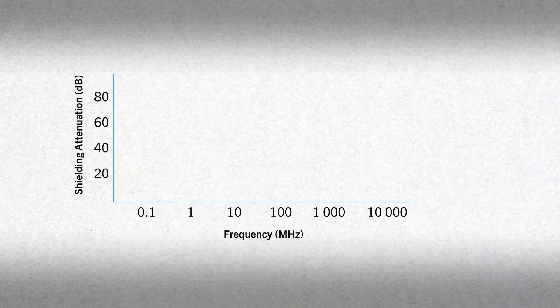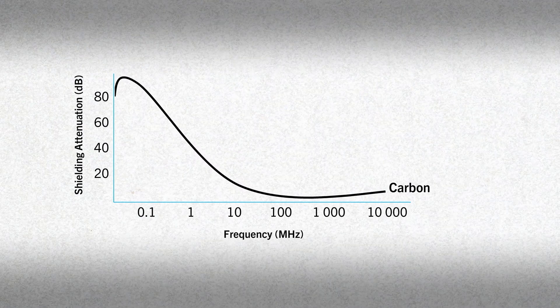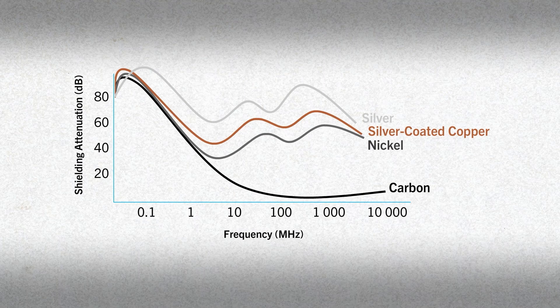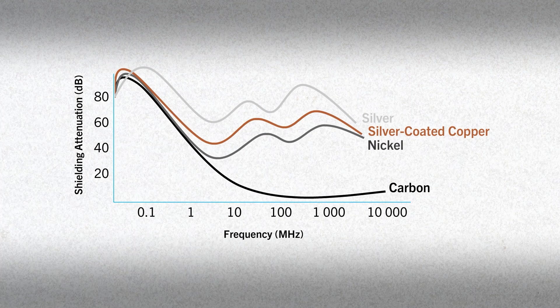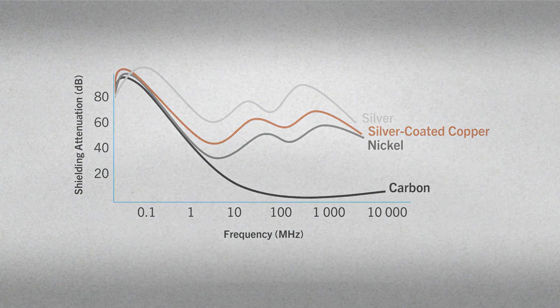In terms of electromagnetic shielding effectiveness, MG offers carbon, nickel, silver coated copper, and silver. So consider the frequency your device operates at and what level of attenuation you require.